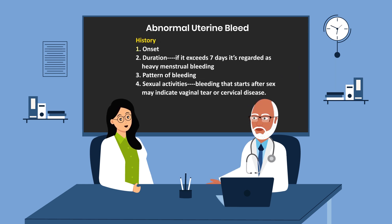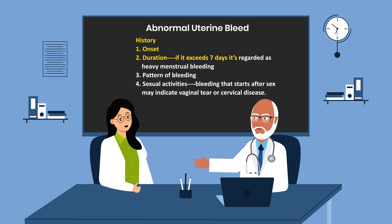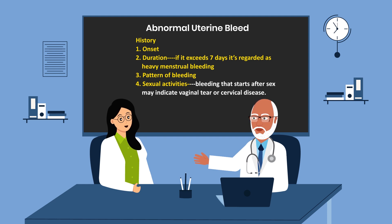For a woman who comes in with abnormal uterine bleeding, a good history should be taken. The onset and duration of the bleed should be determined — if it exceeds seven days, it is regarded as heavy menstrual bleeding. The pattern of the bleeding should be investigated. You should also ask about the woman's sexual activity, as bleeding that starts after sex may indicate vaginal tear or cervical disease.